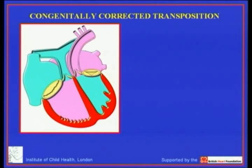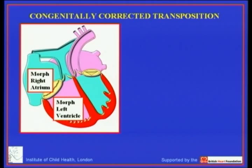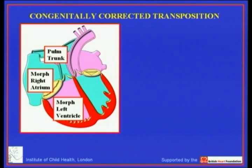Taking you through some cartoons: the morphologically right atrium, shown here in its normal position, connects to the right-sided morphologically left ventricle in the setting of left-hand ventricular topology. Even though the pulmonary trunk arises in discordant fashion from this morphologically left ventricle, the systemic venous return will continue to reach the lungs because of the double discordance.